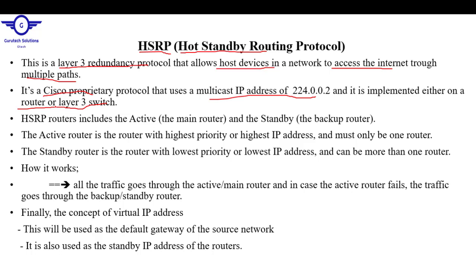There are categories of routers in HSRP protocol. The first router is known as the Active Router — the Active Router is the main router. Another router is called the Standby Router, and the standby router is the backup router. HSRP enables host devices to access another network or the internet through multiple paths, meaning when the main path is down, the backup path will pick up. The Active Router is the router with the highest priority. We choose the router with the highest priority or the highest IP address, and there must only be one Active Router in the network.